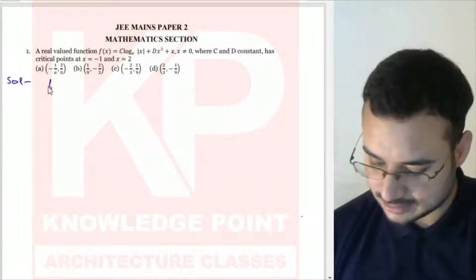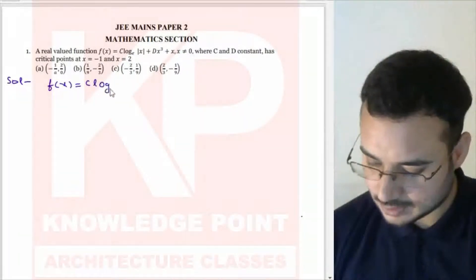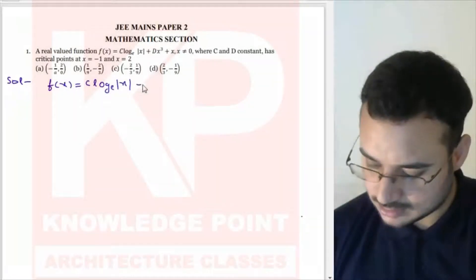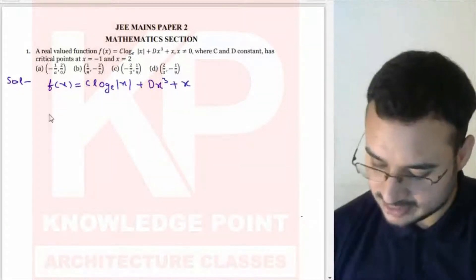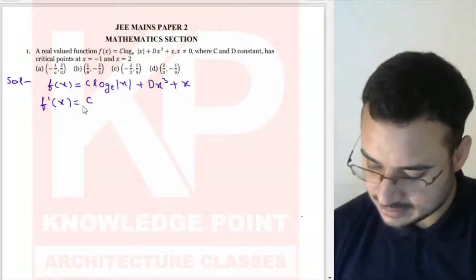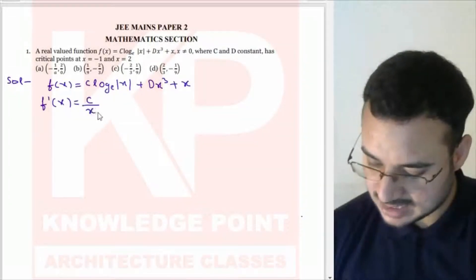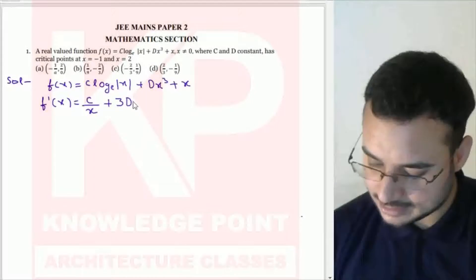Write the given function: f(x) = c·log|x| + dx³ + x. Now differentiate this function with respect to x. We get c/x — because the differential of log|x| is 1/x — plus 3dx² + 1.